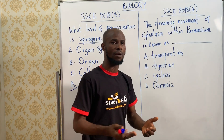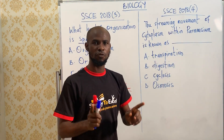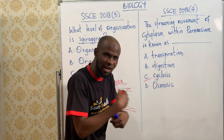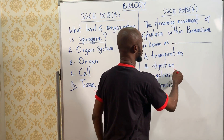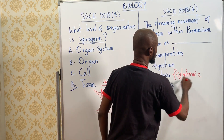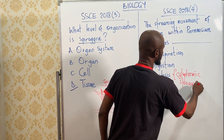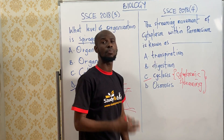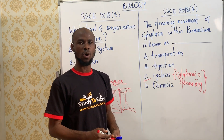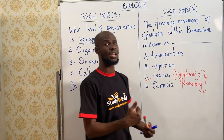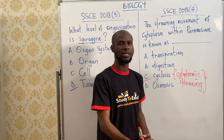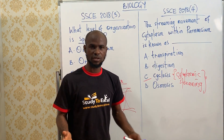Number four: the streaming movement of cytoplasm within paramecium is — the answer is cyclosis, which can also be called cytoplasmic streaming. Cyclosis is the movement of the jelly-like fluid inside the cytoplasm. This movement is important because it helps to move different organelles and food materials from one place to another.